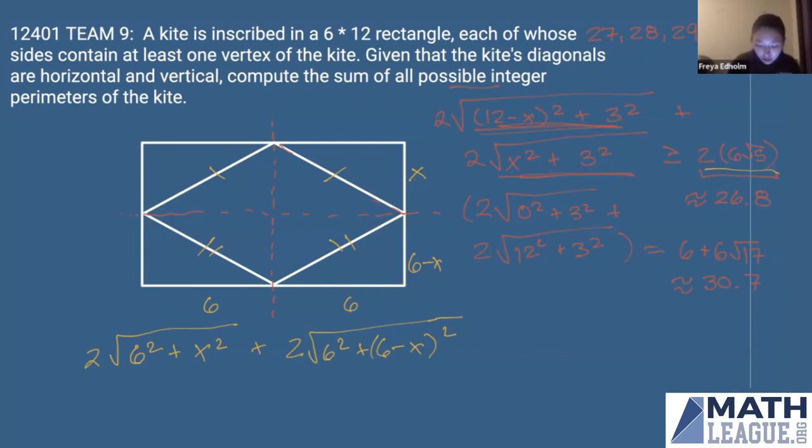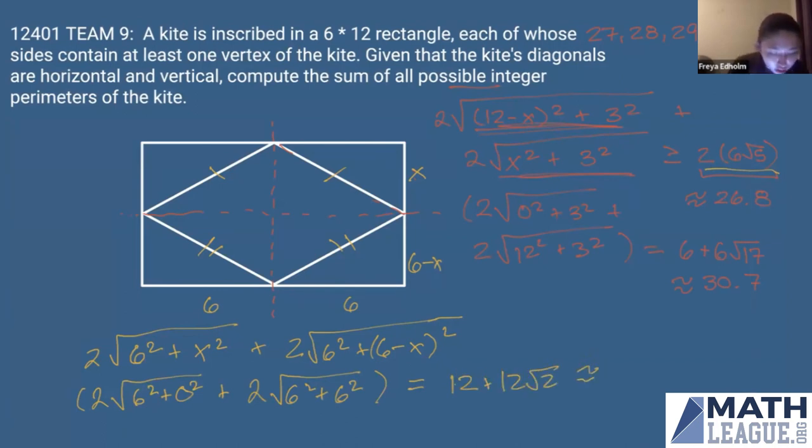So our maximum would end up happening when x is equal to zero or x is equal to six. That's just a degenerate kite or a triangle. And that's going to give us a perimeter of two times the square root of six squared plus zero squared plus two times the square root of six squared plus six squared. And that is going to be, plugging that into our calculator, 12 plus 12 root two, which is around 29.